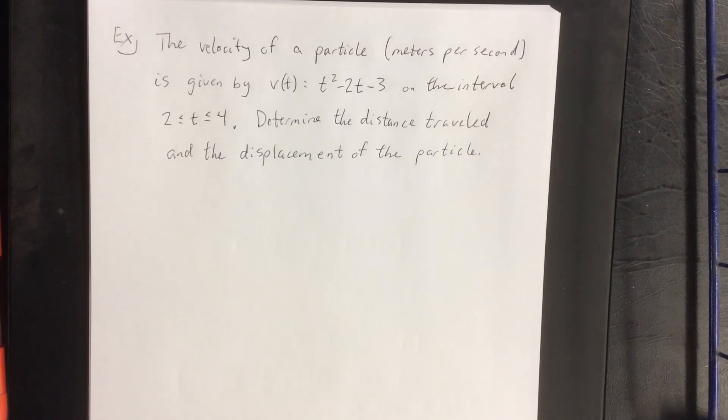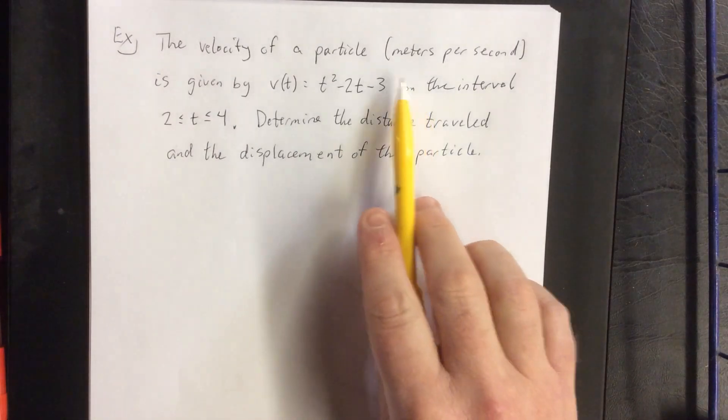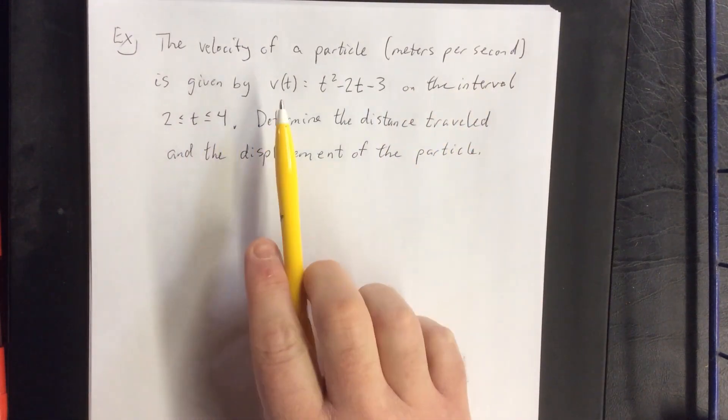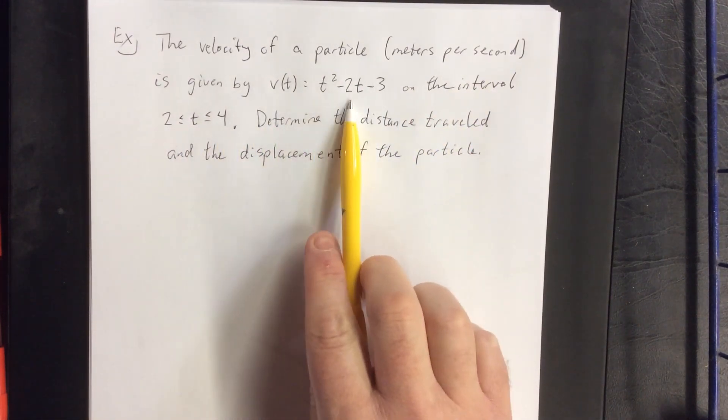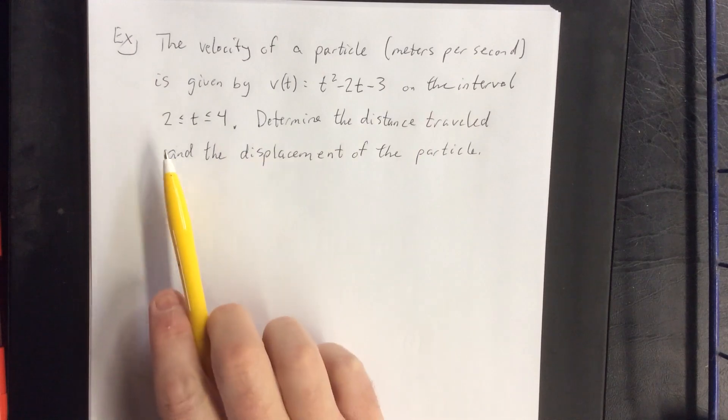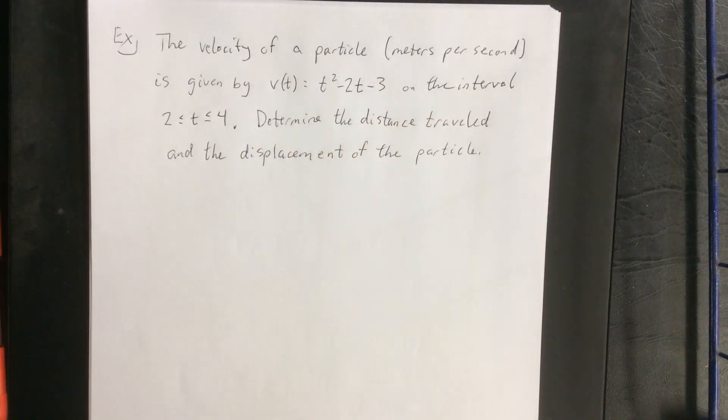For an example of the net change theorem as well as the difference between distance and displacement, I would like to consider the following example. The velocity of a particle in meters per second is given by v(t) = t² - 2t - 3 on the interval t goes from 2 to 4. Determine the distance traveled and the displacement of the particle on that interval.